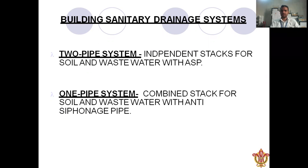A two pipe system has independent stacks for soil and wastewater with anti-siphon pipe (ASP). A one pipe system has a combined stack for soil and wastewater.